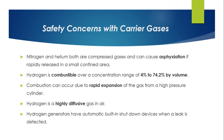Regarding safety concerns: nitrogen and helium are compressed gases that can cause asphyxiation if rapidly released in a small confined area. Hydrogen is combustible over a concentration range of 4% to 74.2% by volume, and combustion can occur due to rapid expansion from a high-pressure cylinder. Hydrogen is highly diffusive in air, but hydrogen generators have automatic built-in shut-down devices when a leak is detected.